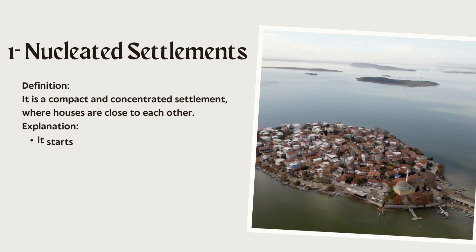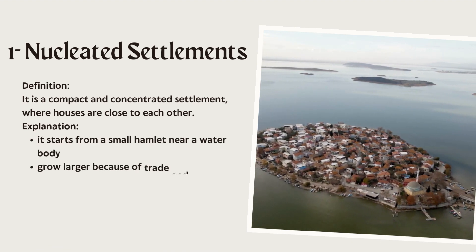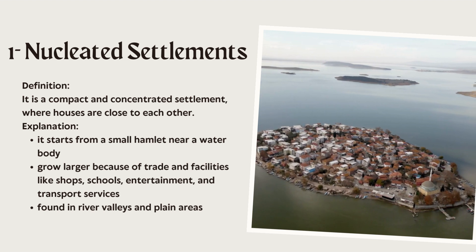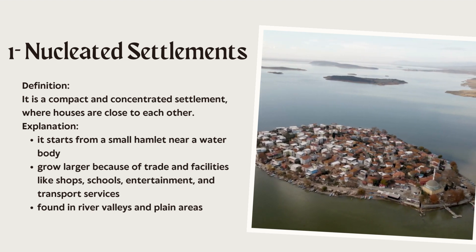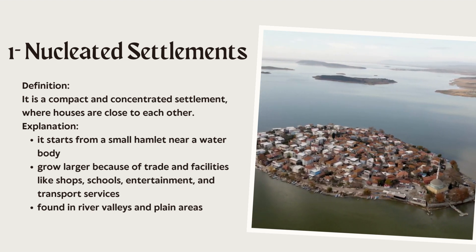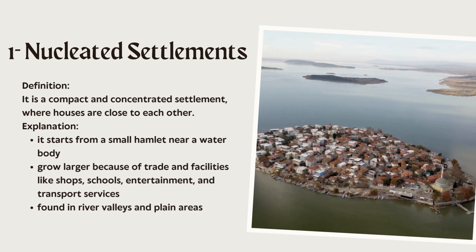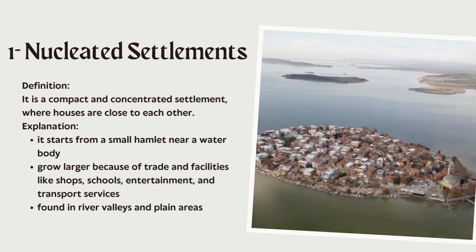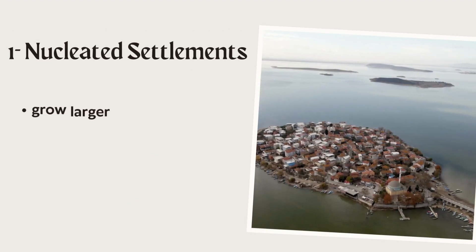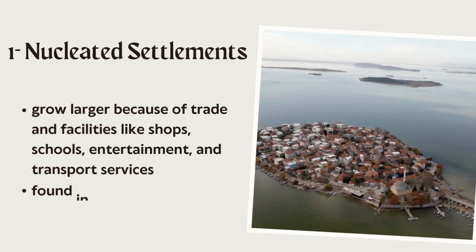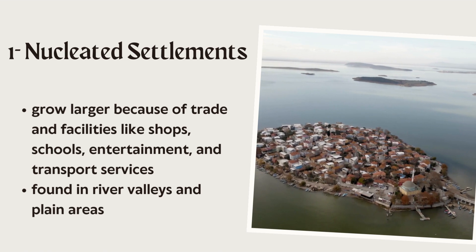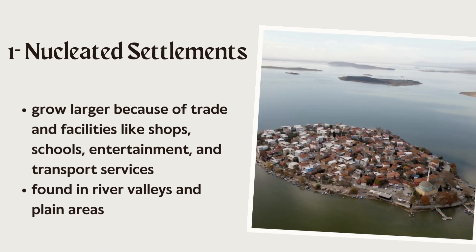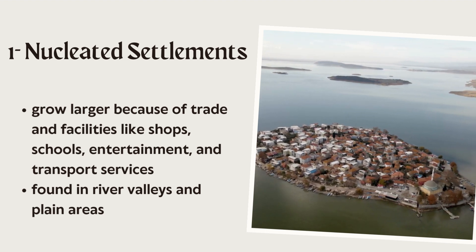The first type of settlement is nucleated settlement. Nucleated settlement means it's a compact and concentrated settlement where houses are close to each other. Such type of settlement starts from a small hamlet near a water body, but with the passage of time they grow larger because of trade and facilities like shops, schools, entertainment, and transport services.